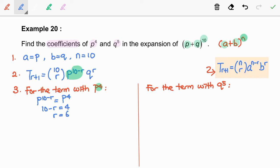Another one. For the term with q^5, we are going to compare q^5 with q^r. Here, r = 5.